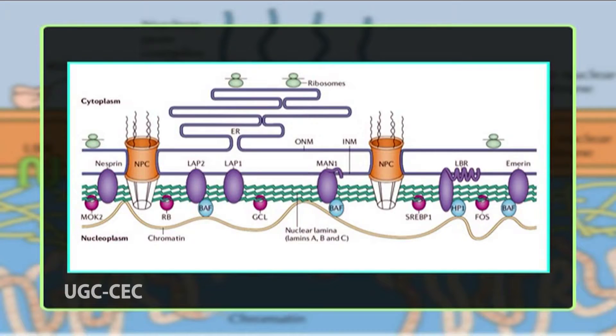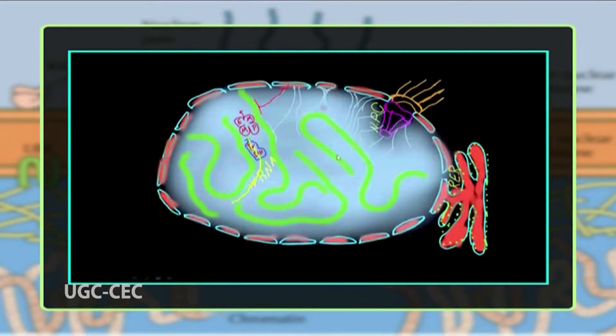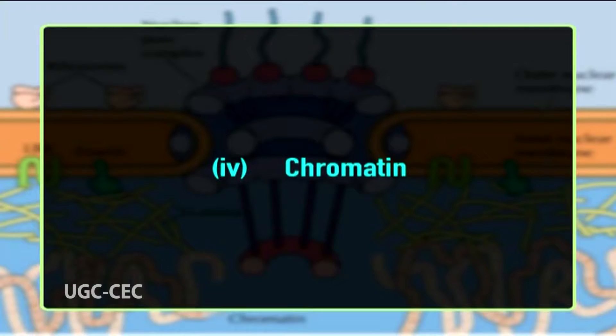Third, the nuclear matrix or nuclear skeleton is a fine network of proteinaceous fibrils that traverses the whole nucleus. The fibrils are similar to intermediate filaments and are called fibrous lamina or nuclear lamina. Fibrous lamina is in direct contact with the inner membrane of the nuclear envelope and is 150 to 300 angstroms thick. The nuclear matrix has acidic proteins.